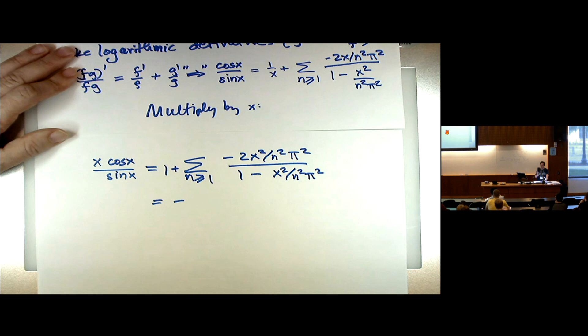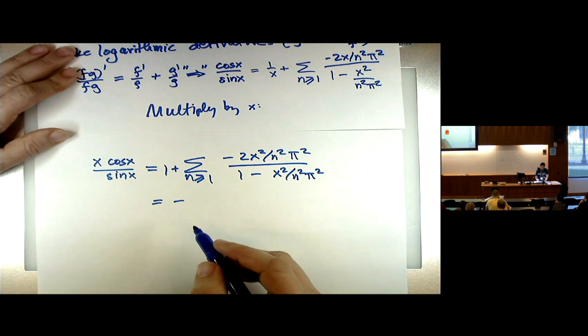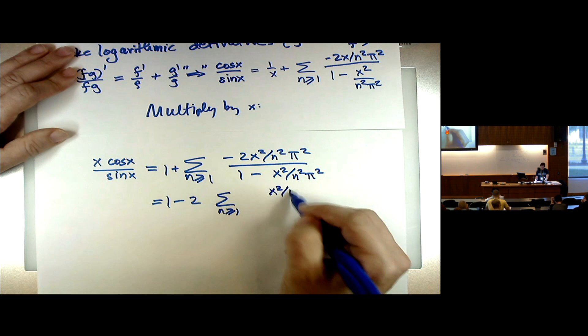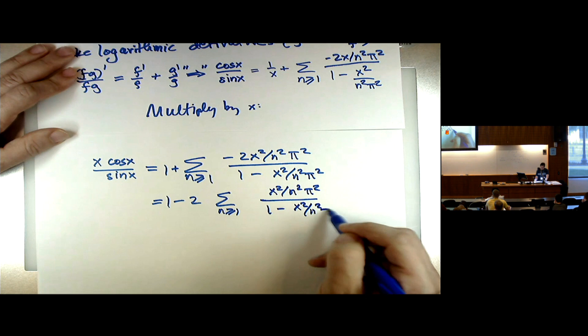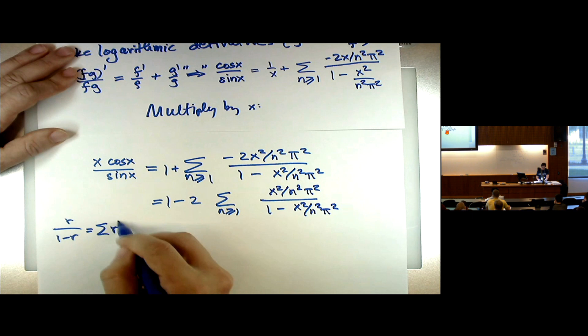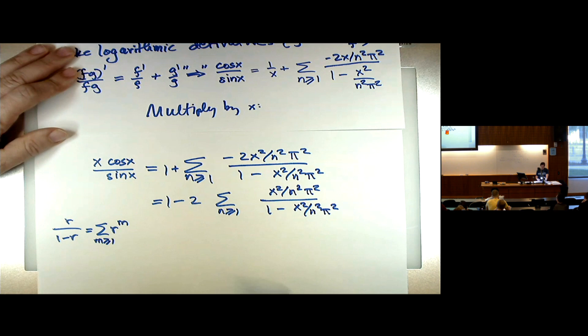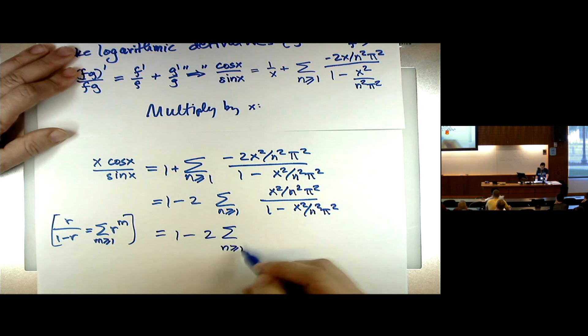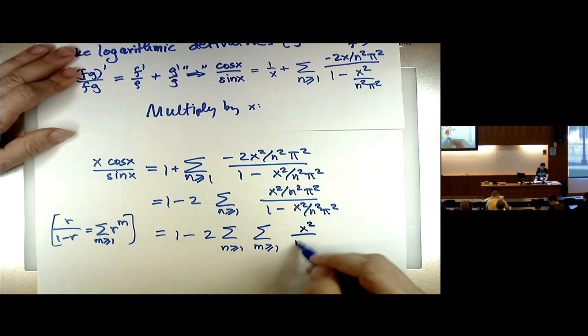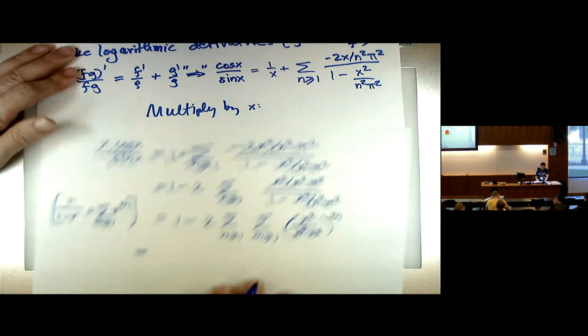So I'll switch the order of summation. The sum on the inside does not depend on m anymore, so I can move the x and pi terms out front, and on the inside I have my zeta value — that's zeta(2m). So on the one hand this series has a power series representation, and the coefficient of x^{2m} is −2·zeta(2m)/π^{2m}.